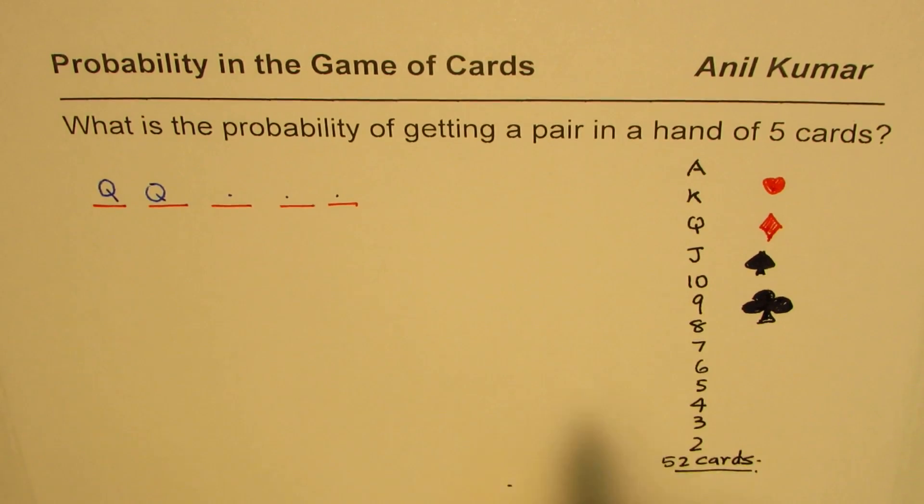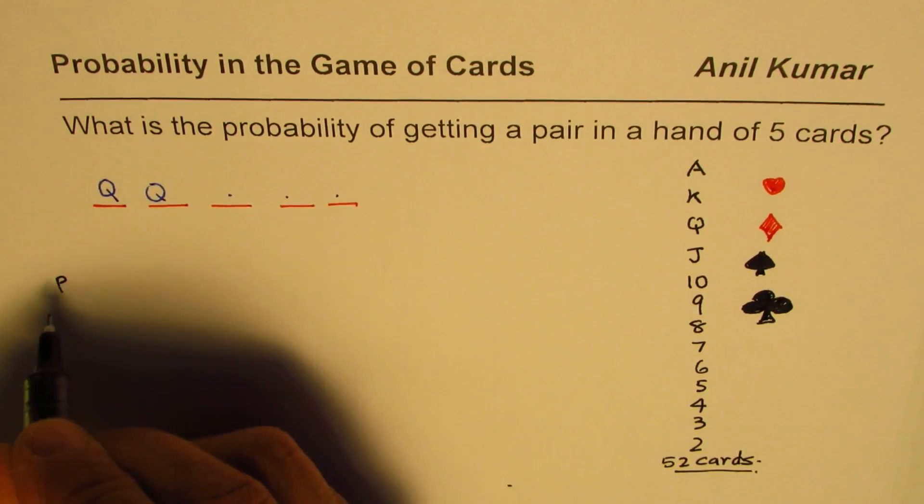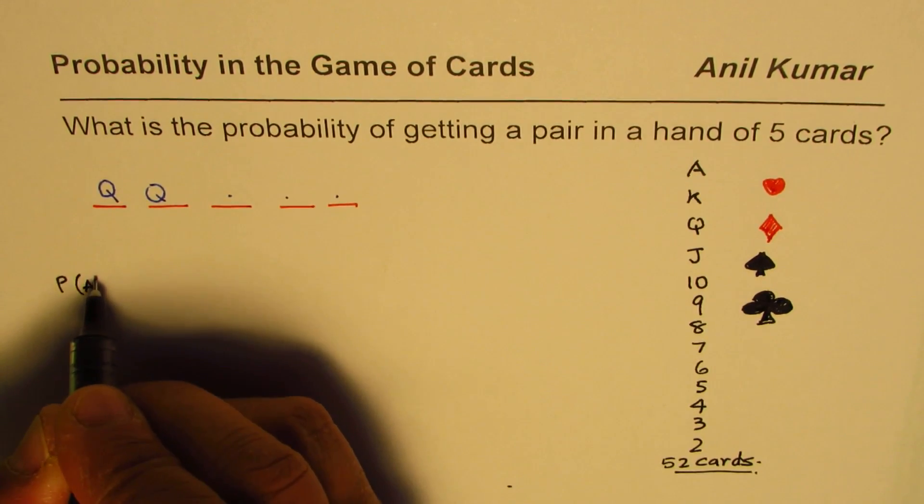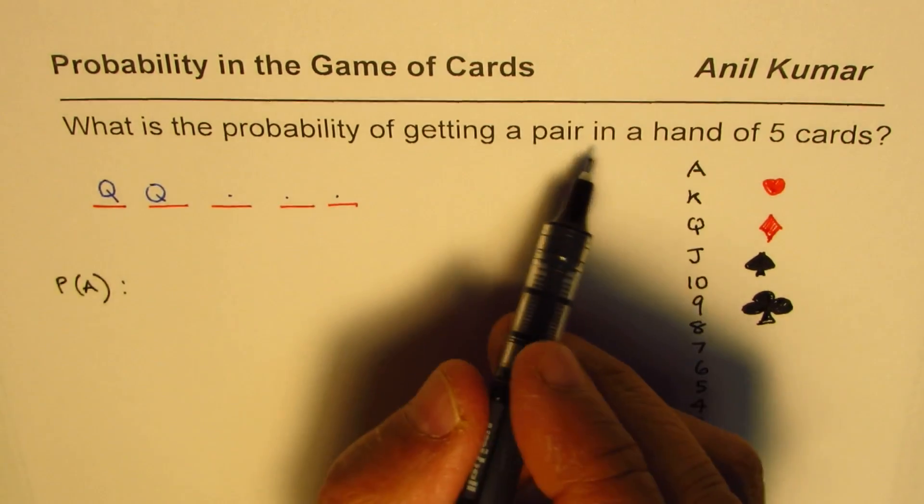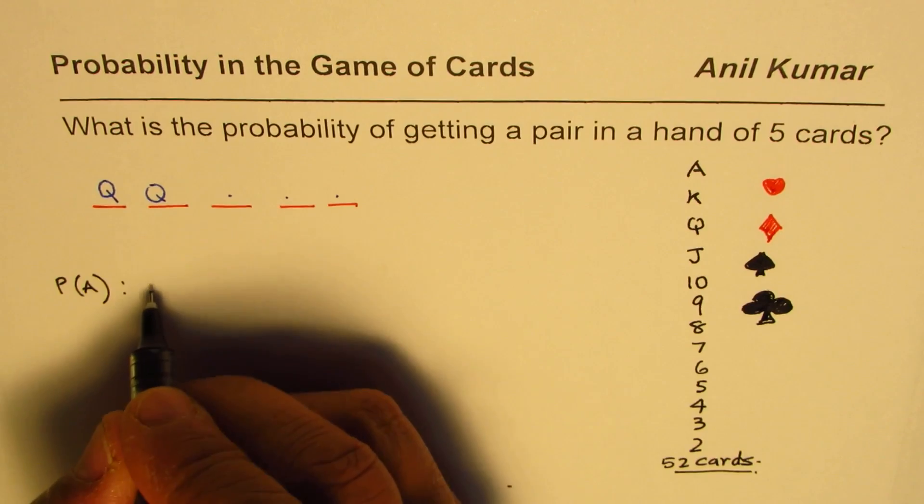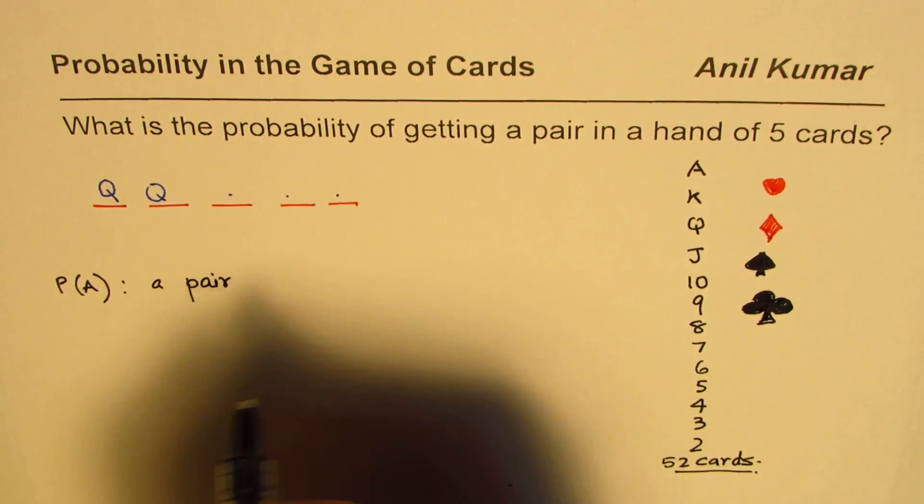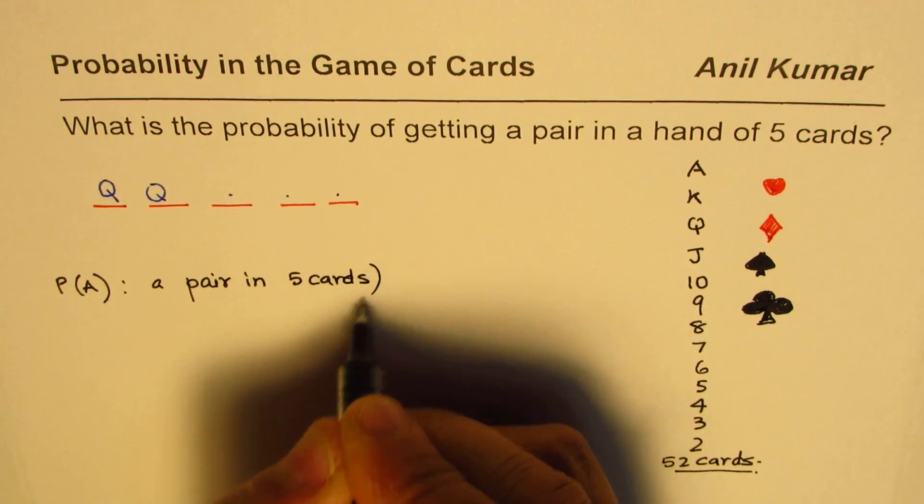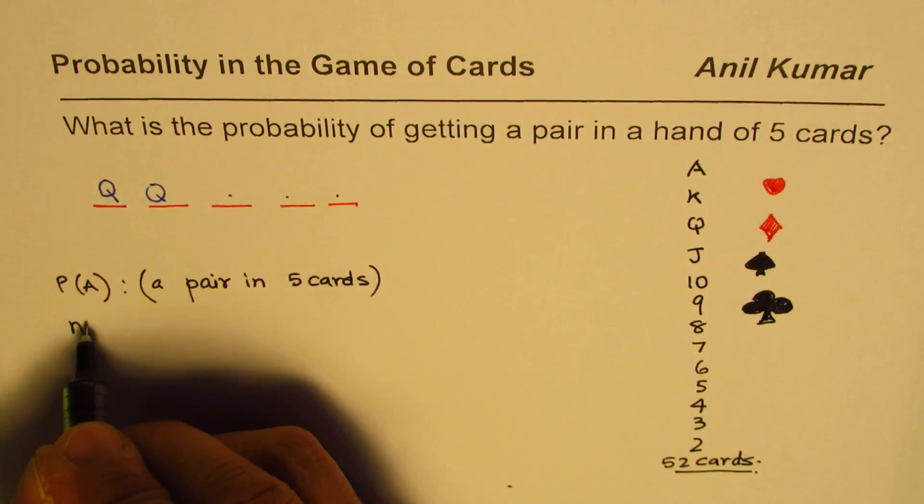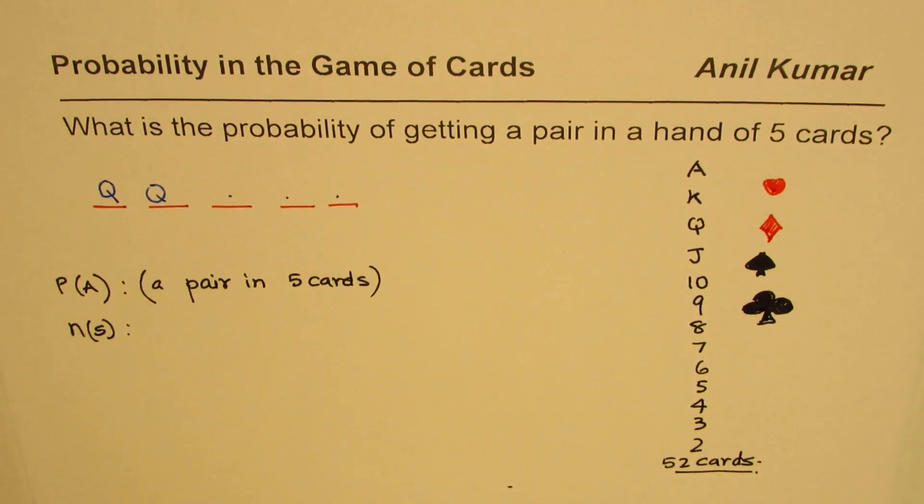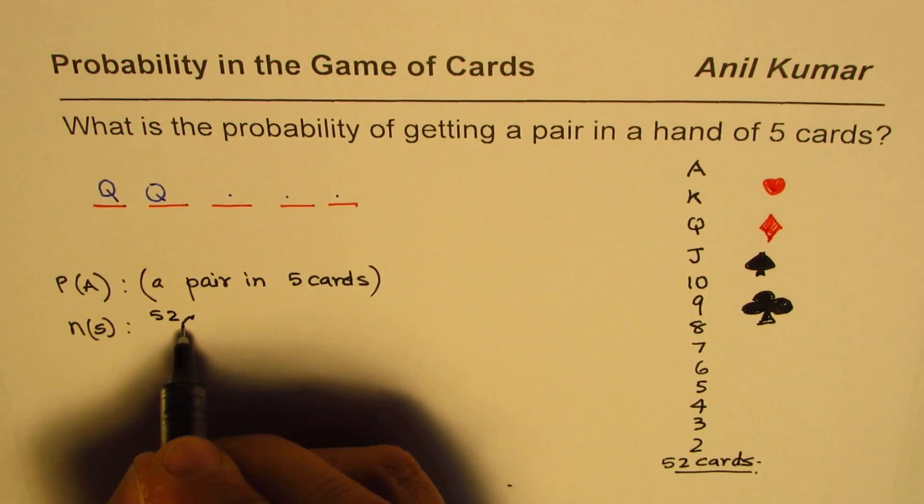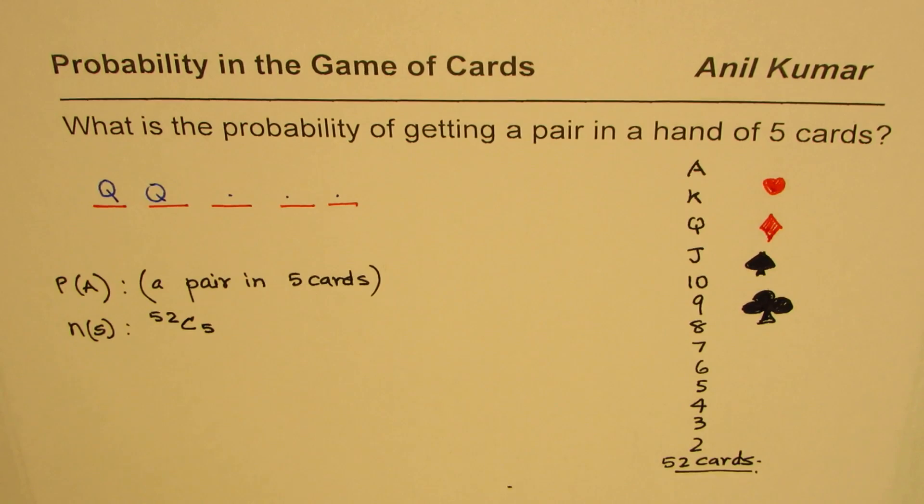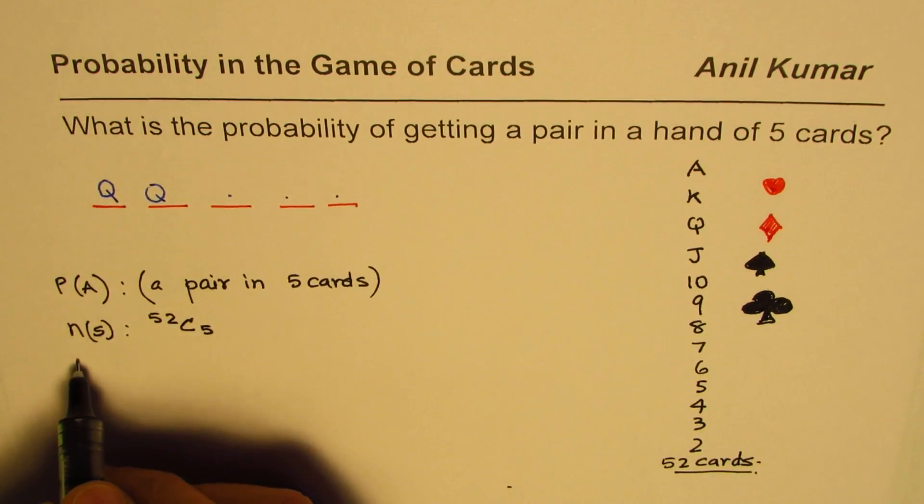Let's write probability. The probability of this event, which is event A—getting a pair in five cards—is what we need to find. The total number of options is we have to choose five out of 52 cards, so it is 52C5. Order is not important when you have a hand of five cards.